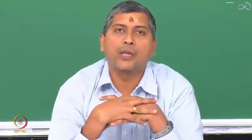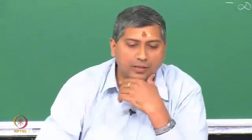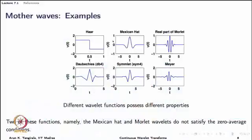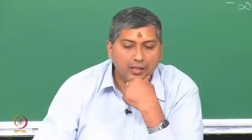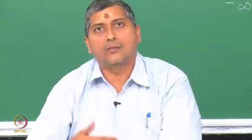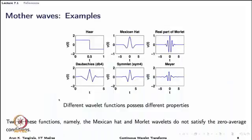Each mother wave has different characteristics, and depending on what you want to analyze in the signal, you choose a particular wavelet. For example, if you want to detect sharp discontinuities like those in the Haar wavelet, Haar is the ideal choice. If you want to detect regularities, you choose a smoother wavelet. It should be mentioned that Mexican hat and Morlet wavelets do not satisfy the zero average condition generally required of a mother wave, which we will discuss shortly.